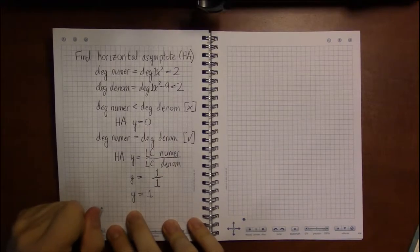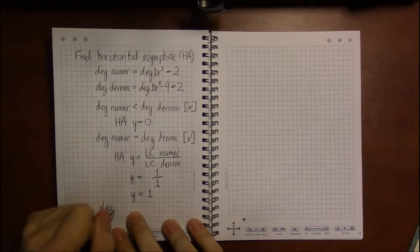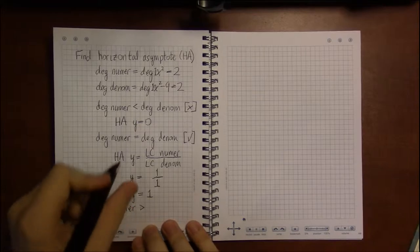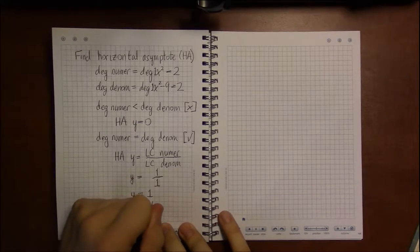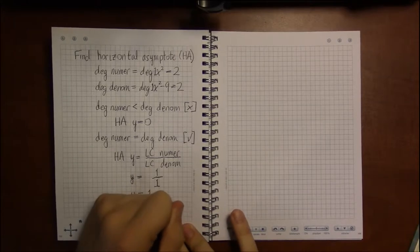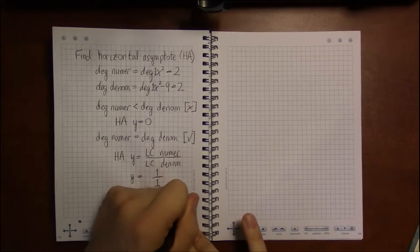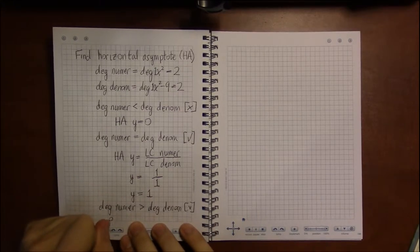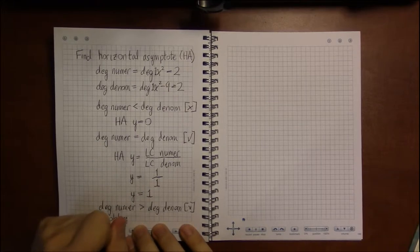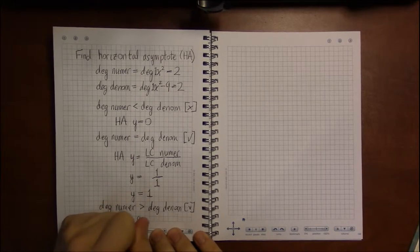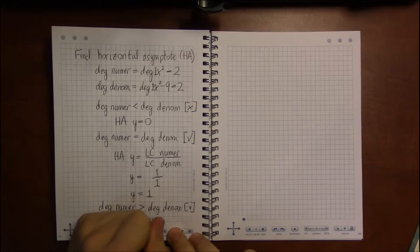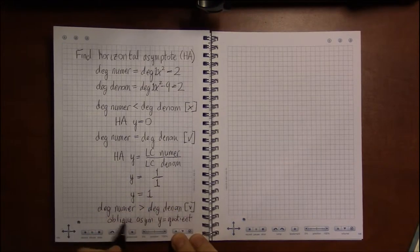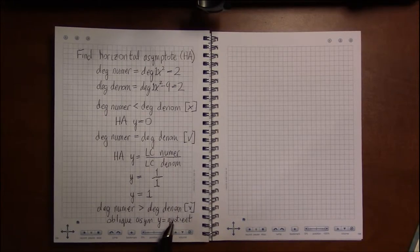And then finally, it could be the case that the degree of the numerator is larger. The fraction is top-heavy, so to speak. In that case, which is not the case we're in, you're going to have an oblique, O-B-L-I-Q-U-E asymptote, where y is going to be the quotient of the numerator divided by the denominator.